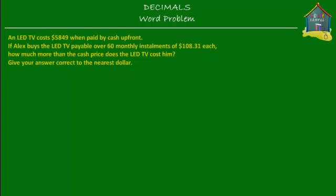Welcome to homecampus.com.sg. Let's solve this word problem. It says that an LED TV costs $5,849 when paid by cash upfront.